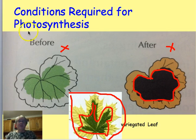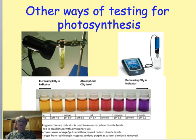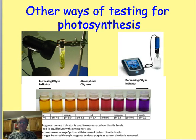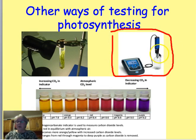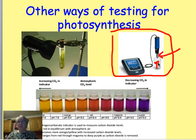There are other ways of testing for photosynthesis happening, and we'll look at some more of these when we look at limiting factors of photosynthesis. One way is to use an oxygen probe. Here's the probe — you can stick your plant into a bottle and then measure how much oxygen is given out by the plant, and that will give you an indication of how much photosynthesis is happening.